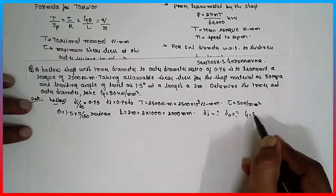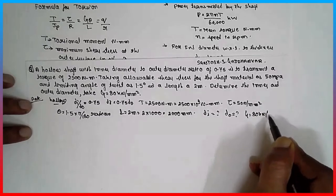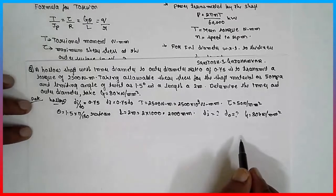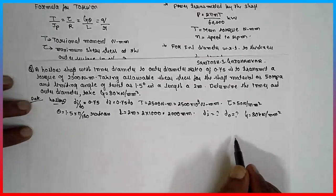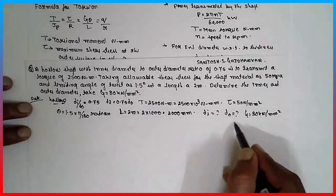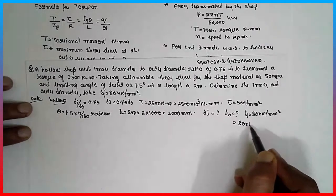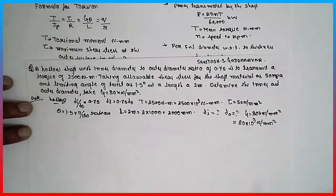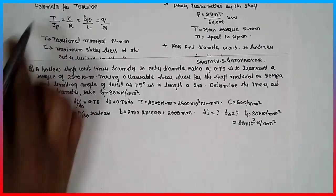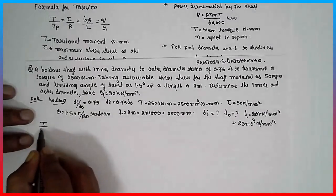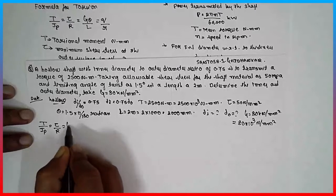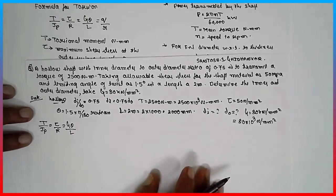Take G equal to 80 kilo Newton per mm² — that means 80 × 10³ N/mm². We have to find the inner and outer diameter. I will use the torsion formula: T/Jp = tau/R = G·theta/L.